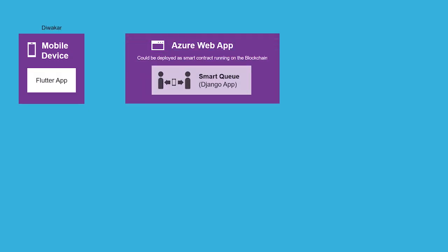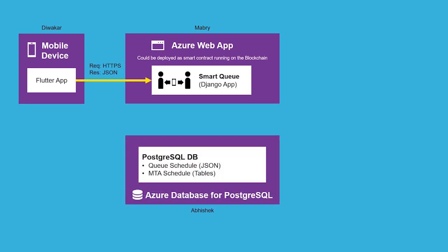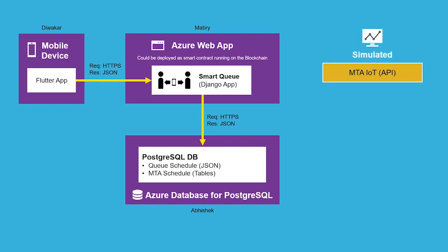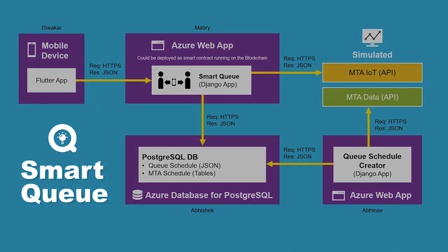The app uses the Flutter framework to run natively on Android and iOS. The app communicates with the Smart Queue, which is Python code running in Azure. Our data pipeline pulls real-time information from the MTA and updates the Azure database, which feeds the Smart Queue. Each component is designed to scale separately.